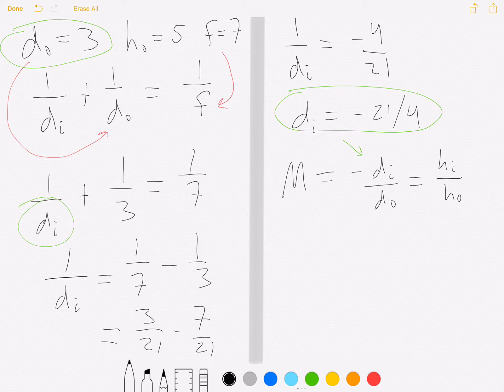So let's see what that looks like. Magnification equals negative di, which is negative 21 over 4, over do, which is 3. Now our negatives are going to cancel, and 21 over 3 gives us 7, and that 4 will stick around in the denominator. So in this scenario, our magnification is 7/4.